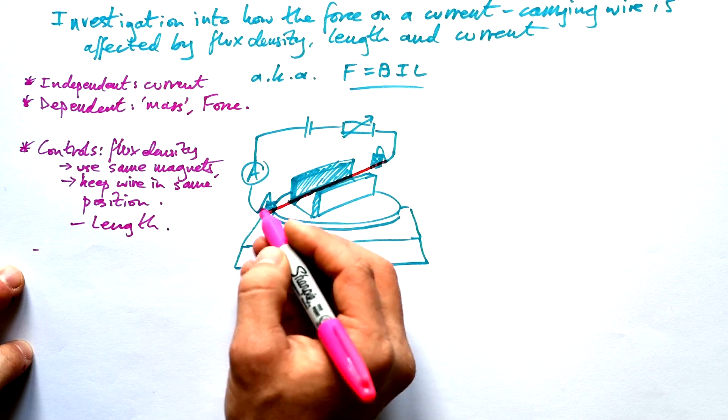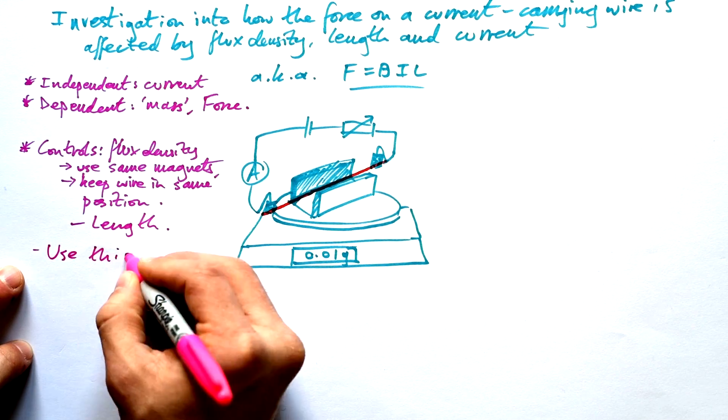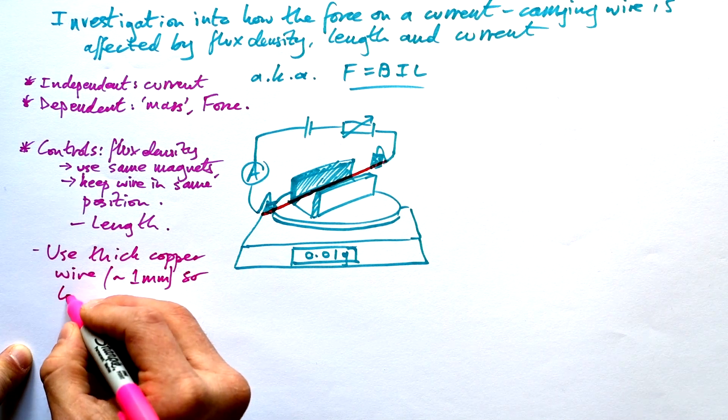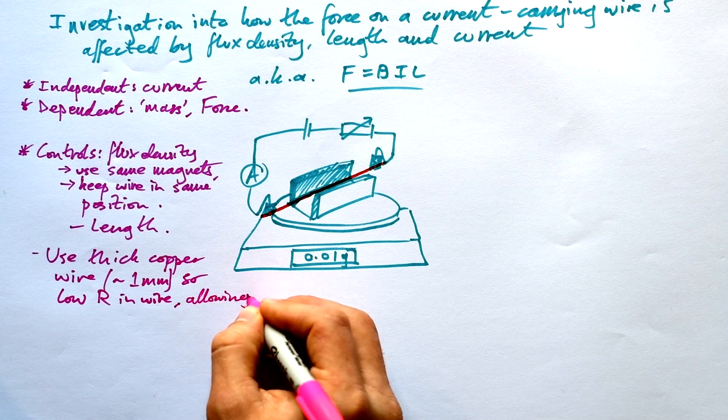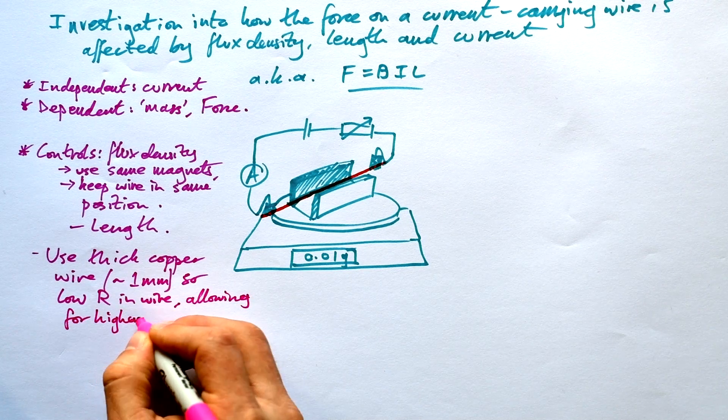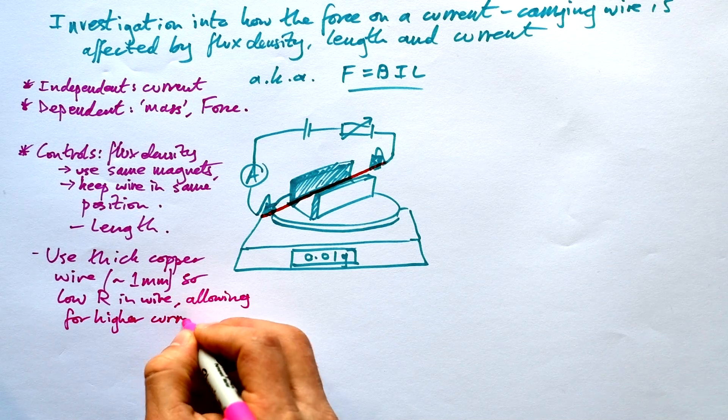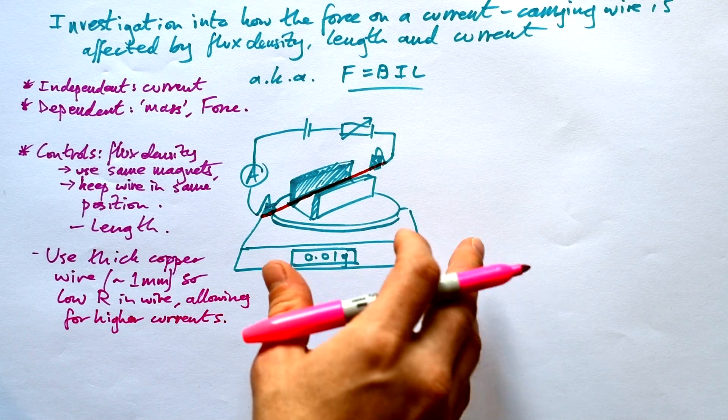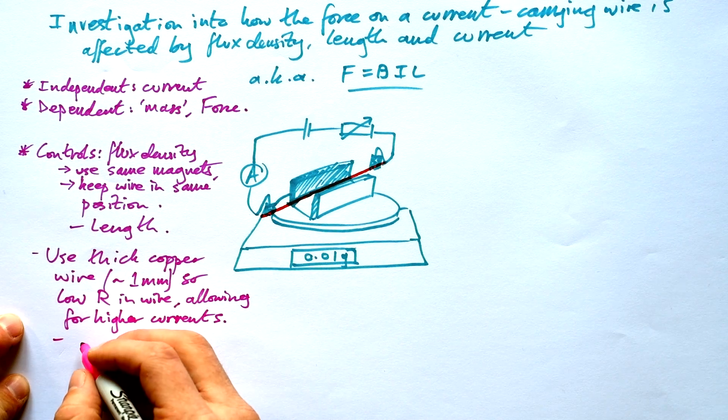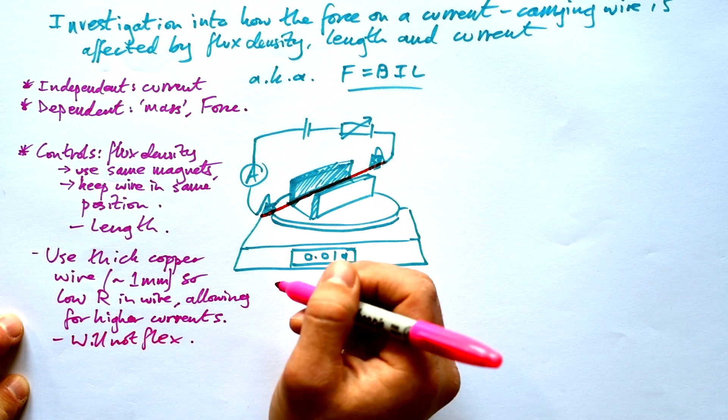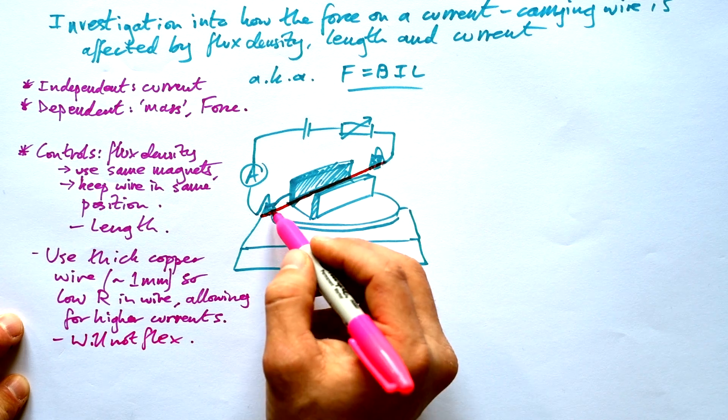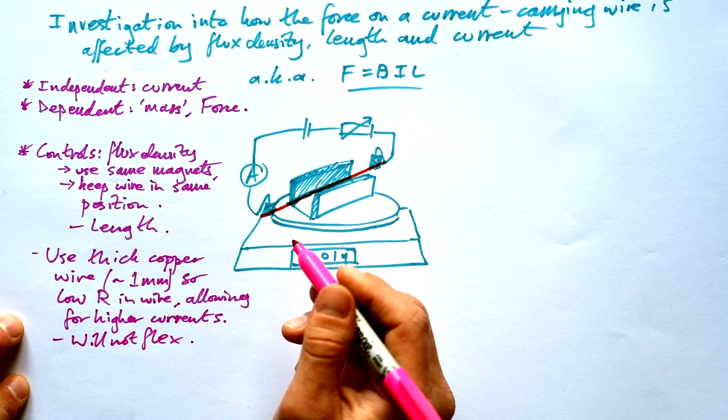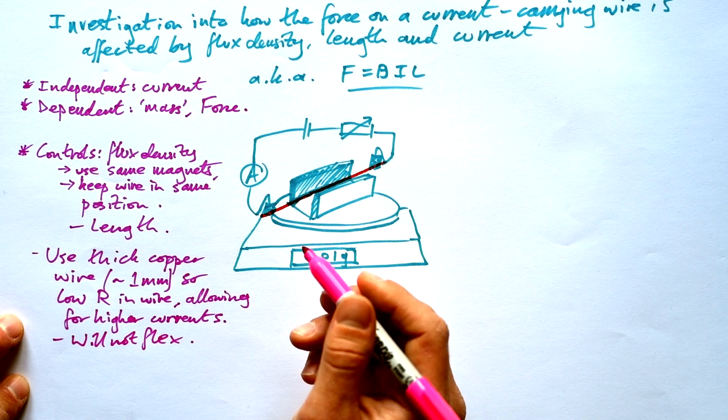What kind of wire are we going to choose? We're going to use thick copper wire, about a millimeter thick, so we have a low resistance and that therefore allows for higher currents. If we have higher currents then bigger numbers means that our uncertainty is going to be lower. So that's a good thing. We also use a thick copper wire because it's not going to flex. If this is a thin piece of copper wire and you turned it on the wire would flex a little bit, it would bow. That is ultimately going to change the length and it's going to experience a different flux density as well if it moves.